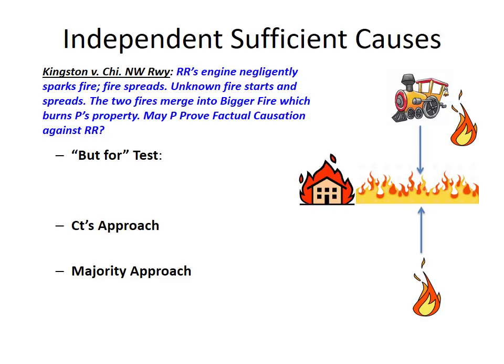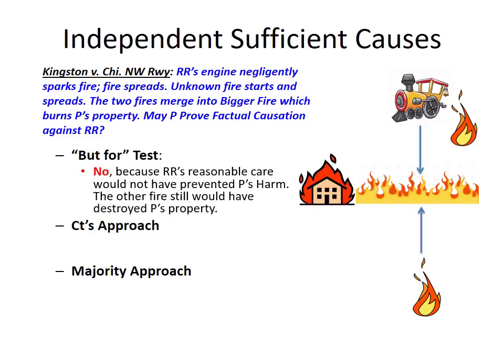If you apply the but-for test, the plaintiff is going to have a problem. The question is whether the exercise of reasonable care by the railroad would have prevented the fire, and the answer looks like it wouldn't. Even if the railroad had acted reasonably and not emitted that spark, there still was this other unknown fire that presumably would have burned right up to the plaintiff's house and burned it down. Because the railroad wasn't a but-for cause of the property damage, it looks like the railroad would escape responsibility. That just seems unfair, because we know the railroad was negligent.